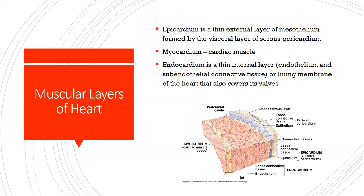The muscular layers of the heart come up in questions about myocarditis or endocarditis. The heart has three layers: the epicardium (external), the myocardium (the muscle layer — myocarditis is inflammation of cardiac muscle), and the endocardium (the thin internal lining covering the valves). Endocarditis is inflammation of the internal layer — that's why we see valvular involvement, including vegetations on valves and regurgitation issues.